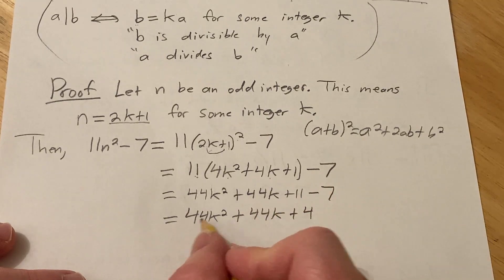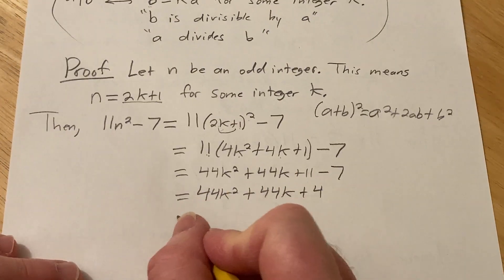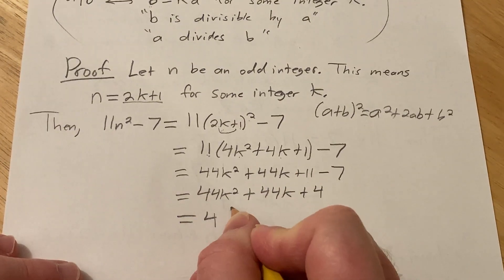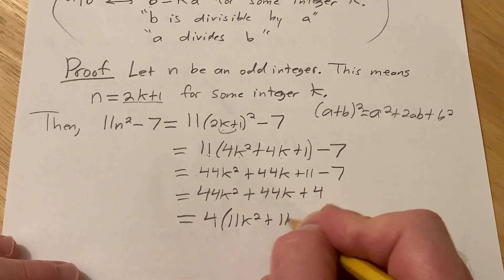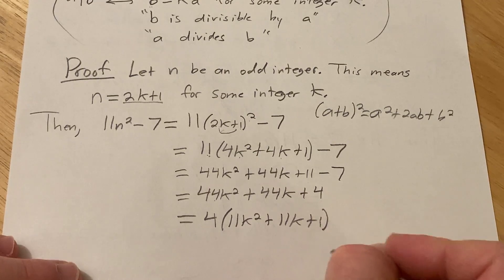That's beautiful because look, they all have a factor of 4. This is what life is all about. 4(11k² + 11k + 1). Look at that.